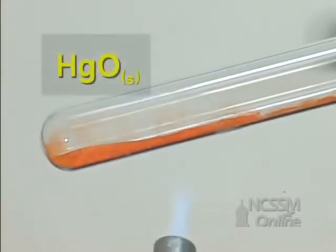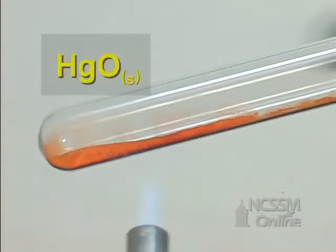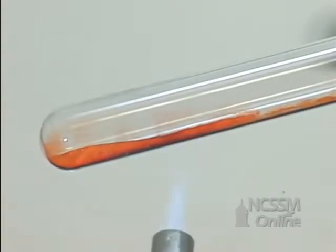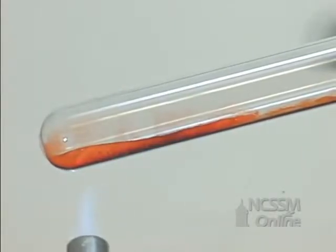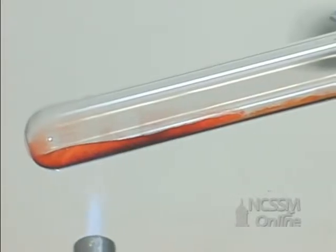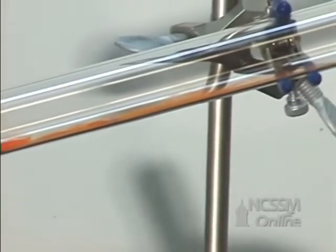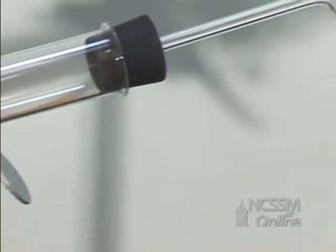In the test tube, we have a sample of red mercury oxide. We will heat the sample and it will decompose to give mercury metal, which will condense at the top of the test tube, and oxygen gas, which we will collect by the displacement of water.